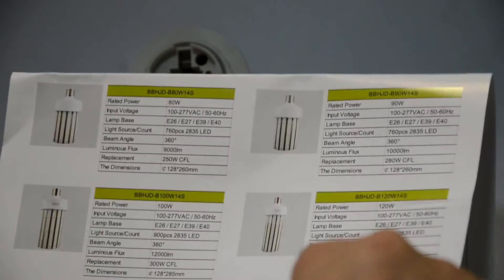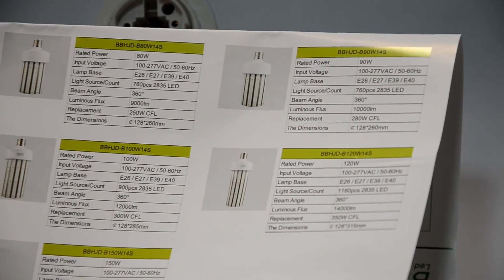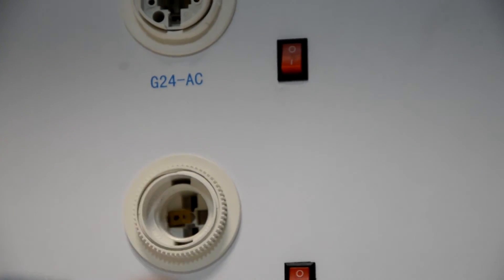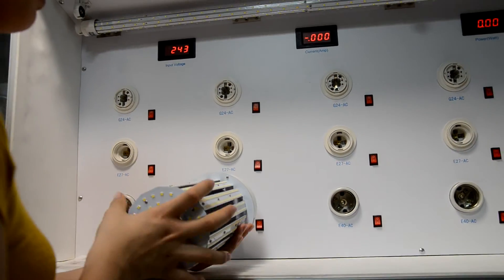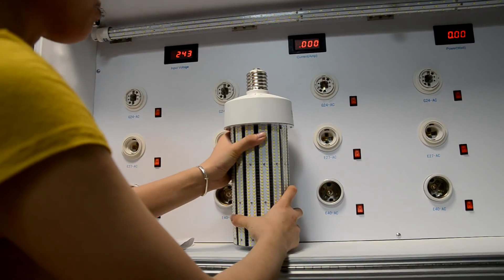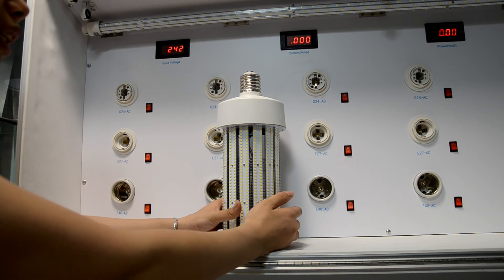The dimension is diameter 128 by 315 millimeters. For this diameter, the heat dispersion area is much bigger, so the heat sink performs better than other lamps.